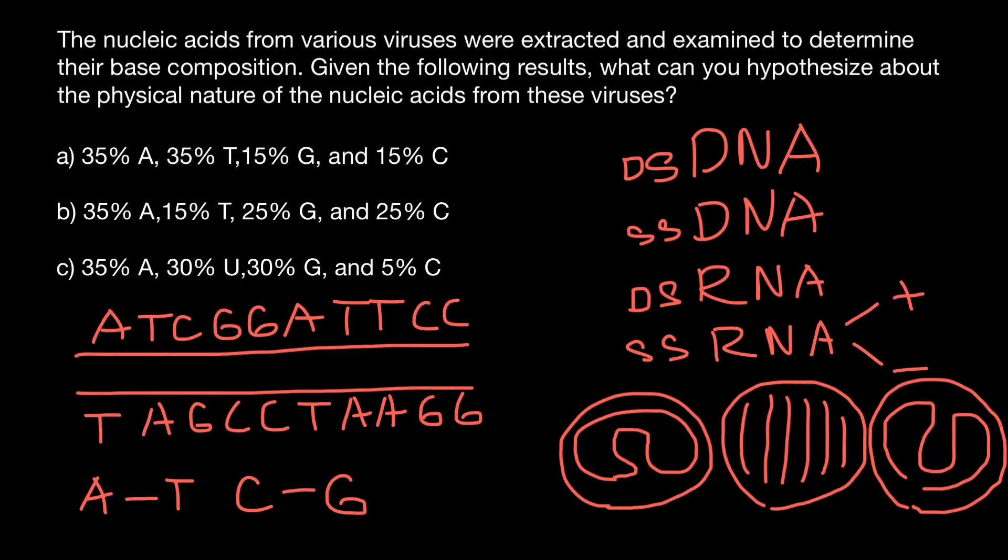If we know this principle, we can solve this problem. For example, take a look. Variant A: we have 35% adenine, 35% thymine, 15% guanine and 15% cytosine. We see that adenine and thymine content is the same, and this is true for double-stranded DNA. And also guanine and cytosine content equals. So we can say that this first variant would be double-stranded DNA virus.